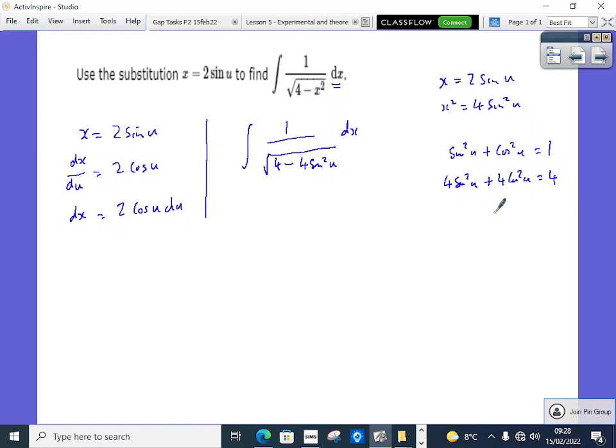And if I take that to the other side, then you know that 4 cos squared u is going to be equal to 4 minus 4 sine squared u, which is exactly that. That's the whole reason why they've done that. Little trick.